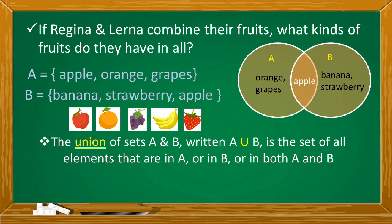Sabi ko nga sa mga nauna kong lessons, in listing the elements or using the roster method, bawal ang nauulit na elements. So A union B is equal to orange, grapes, banana, strawberry, and apple. Hindi inulit si Apple.